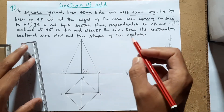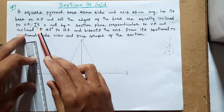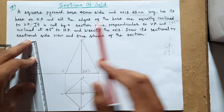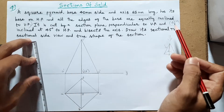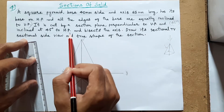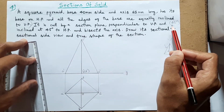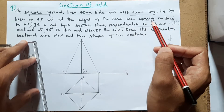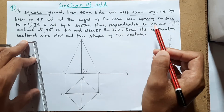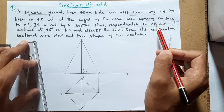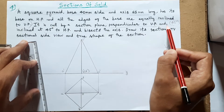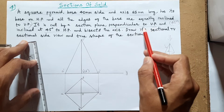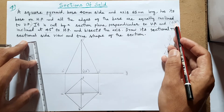Now they are telling it is cut by a section plane perpendicular to VP and 45 degrees inclined to HP. A cutting plane inclined 45 degrees to HP is by default perpendicular to VP. Section planes generally are inclined to one plane and perpendicular to the other. The cutting plane here is inclined to HP at 45 degrees and is therefore vertical or perpendicular to VP.